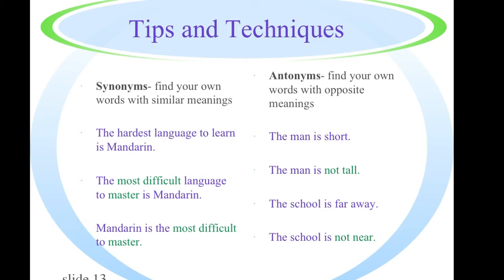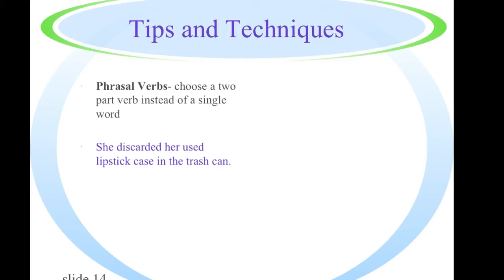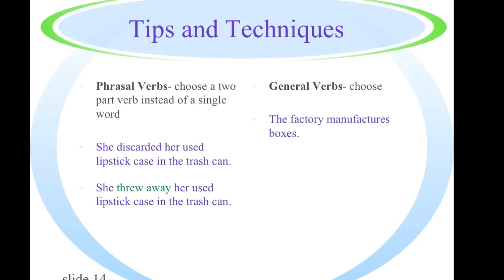Let's look at some additional tips. Phrasal verbs. So you choose a two-word verb instead of a single word. So if we say that she discarded her used lipstick case in the trash can, instead of discarded, we could say she threw away. And that would get the same point across, but it uses some of our own thoughts. We can also choose general verbs. So if the original statement is the factory manufacturers boxes, we could use a more general verb and say it produces boxes. That would work equally as well. So the tips on this screen show you phrasal verbs and general verbs and how we can manipulate them in our paraphrases.